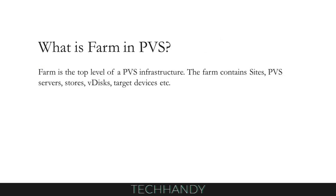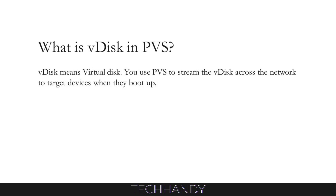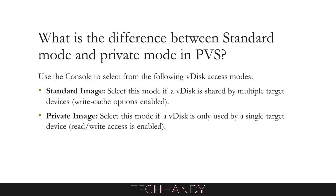What is a farm in PVS? Farm is the top level of a PVS infrastructure. The farm contains sites, PVS servers, stores, v-disks, target devices, etc. What is a v-disk in PVS? V-disk means virtual disk. You use PVS to stream the v-disk across the network to target devices when they boot up. What is the difference between standard mode and private mode in PVS? Standard mode is used when a v-disk needs to be shared by multiple target devices, whereas private mode can be used if a v-disk is only used by a single target device.